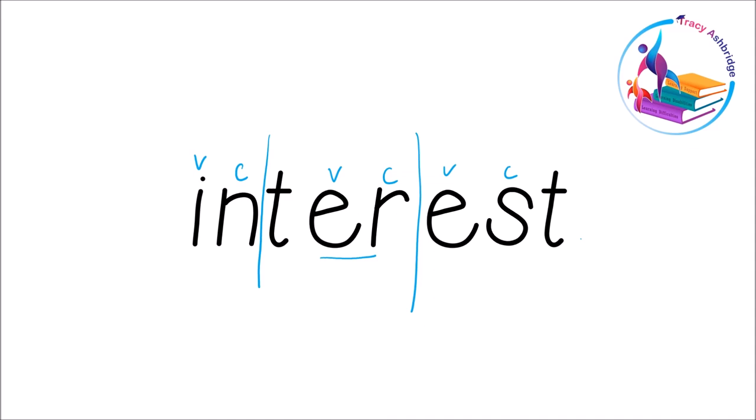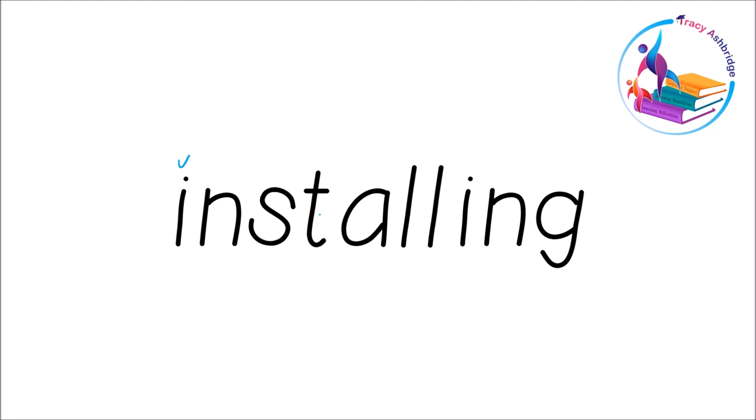Let's have a look at this one. Vowel, consonant, chop. Vowel, digraph there — two letters together — chop; can't chop between the two. Vowel, consonant, digraph there. So: 'in', 'stall' — 'install', 'ing' — 'installing'.